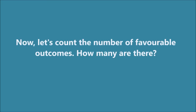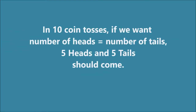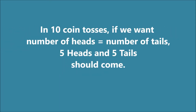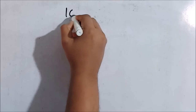Now we know what the possible outcomes are and how many there are. Let's count how many favorable outcomes there are. The event we are interested in is that the number of heads should equal the number of tails. In a total of 10 coin tosses, that means 5 heads and 5 tails should come.